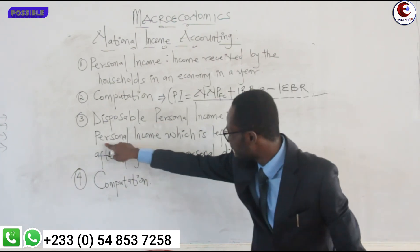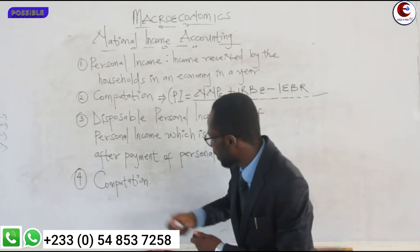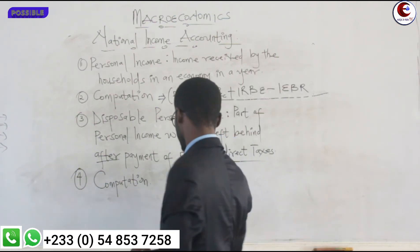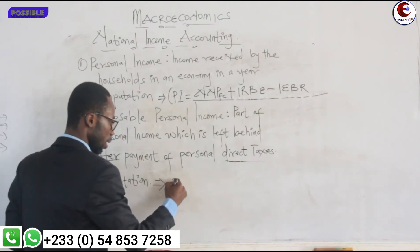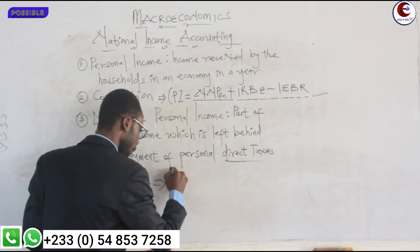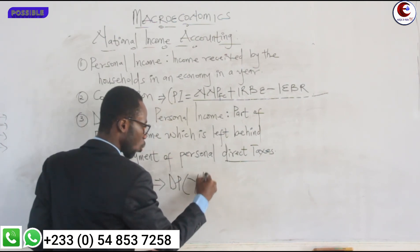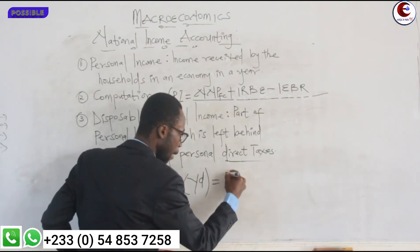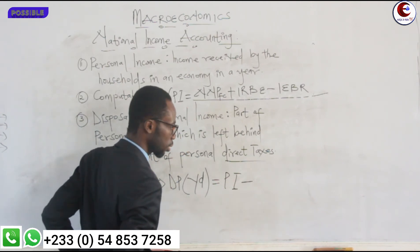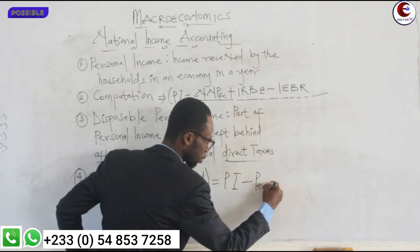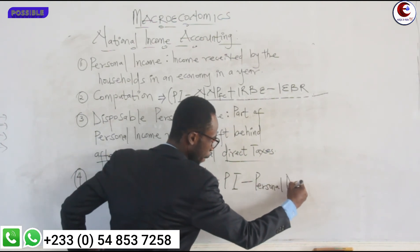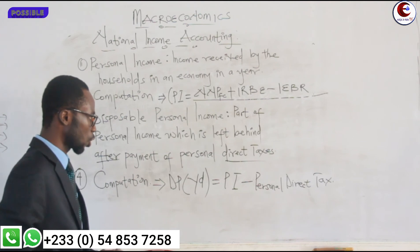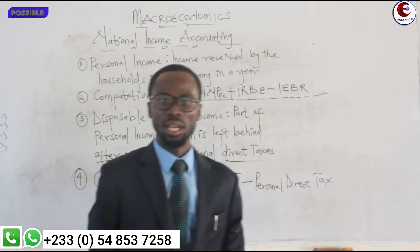So the formula: Disposable income (YD) = Personal income minus personal direct tax. That is the formula for disposable income.